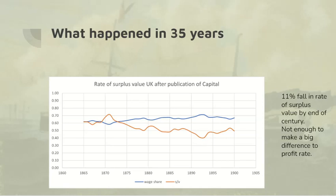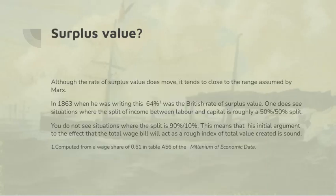This graph shows how the rate of surplus value evolved in the period after Capital was written. The red line is the rate of surplus value. It peaked at about 70% just after 1870, and then settled at around 50% by 1900 — a bit of a decline, arguably an effect of the slowdown in migration from the countryside to the towns which reduced the Reserve Army of Labour, and also the strengthening of trade union organisation in the last part of the 19th century. But that's only an 11% fall in the rate of surplus value, which wouldn't have made a big difference to the rate of profit.